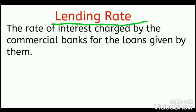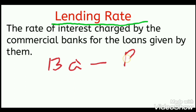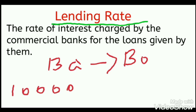The next term is lending rate — the rate of interest charged by commercial banks for the loans given by them. For example, if I borrow rupees 10,000 as a loan from the bank and I pay 12% per annum interest, that 12% is the lending rate. In borrowing rate the bank pays interest to deposit holders, but in lending rate the bank receives interest from its borrowers.